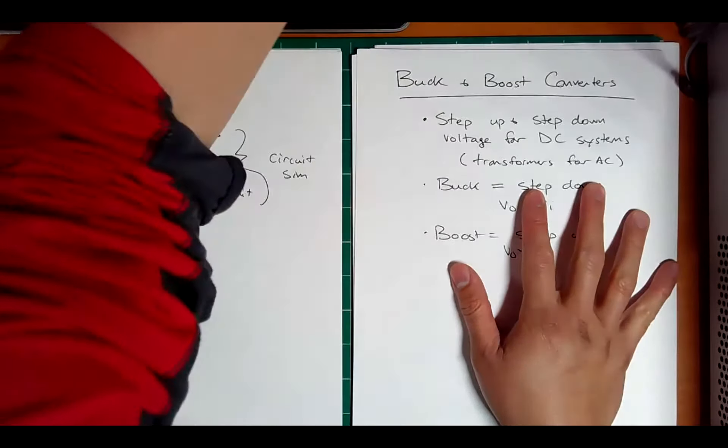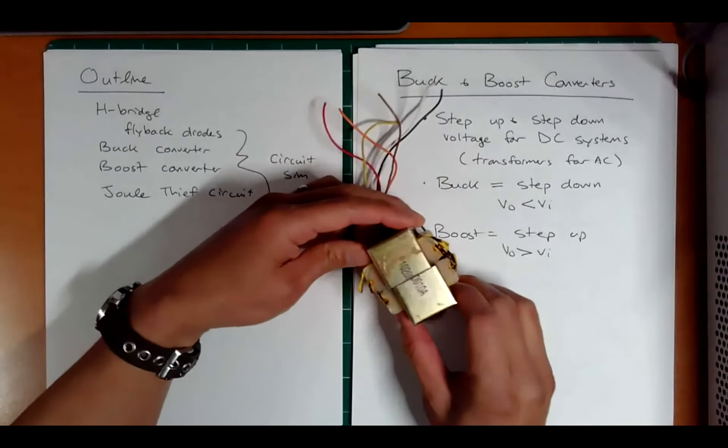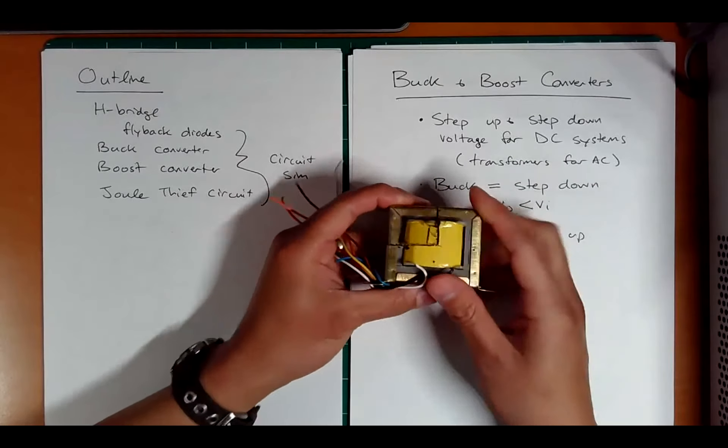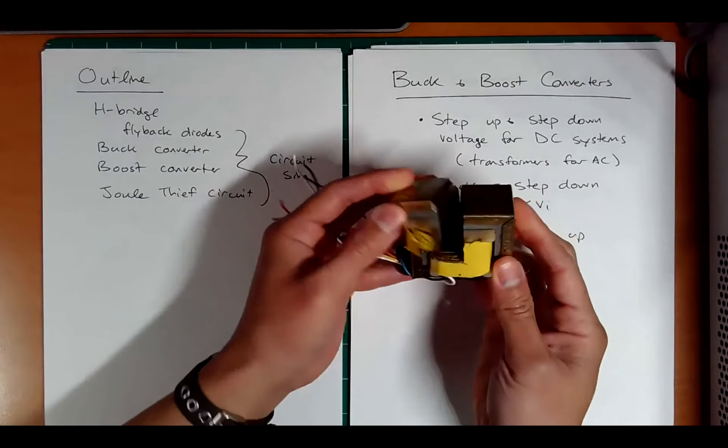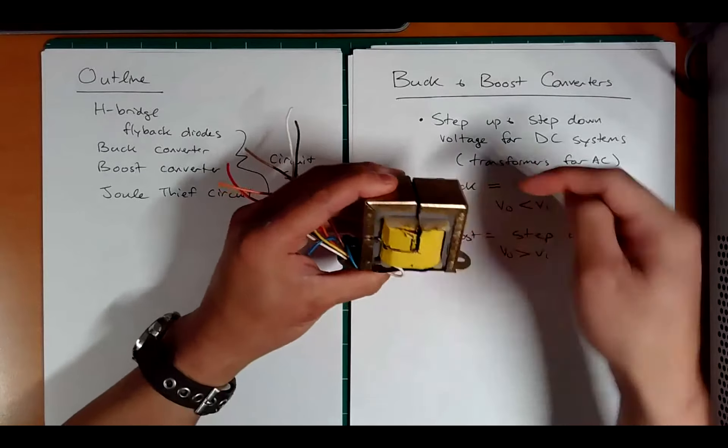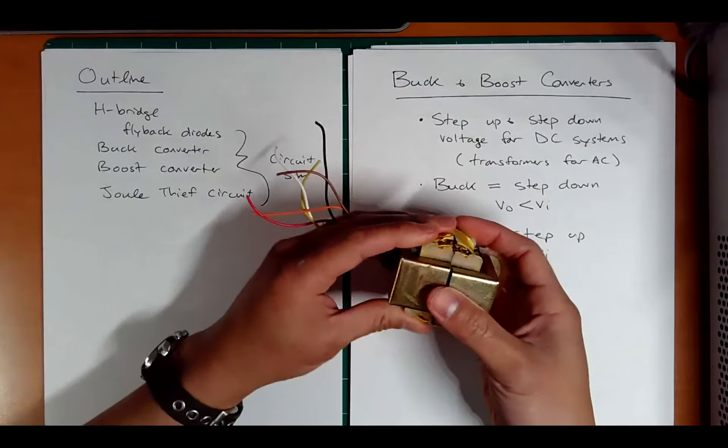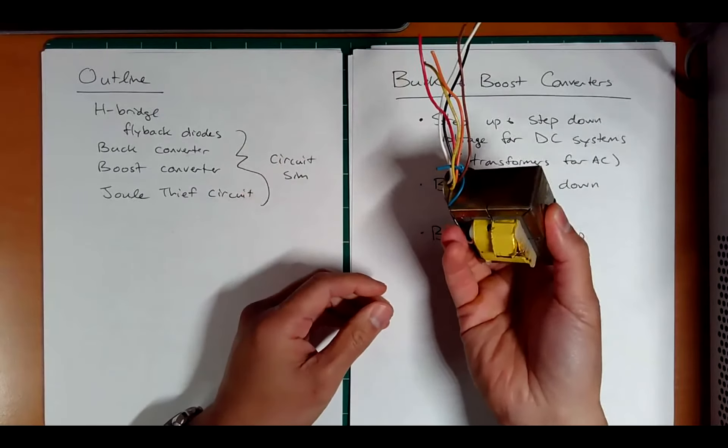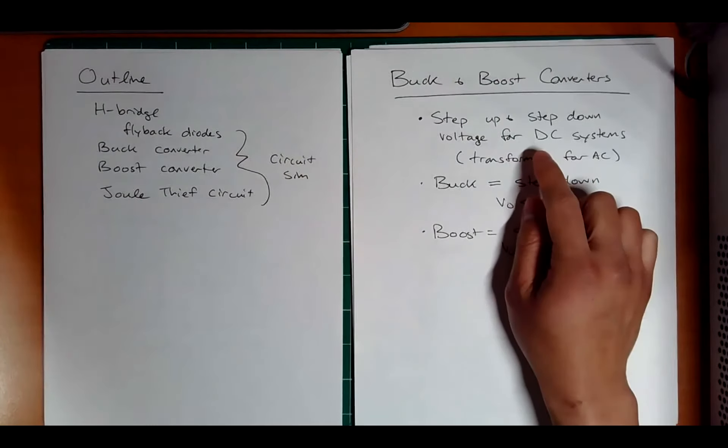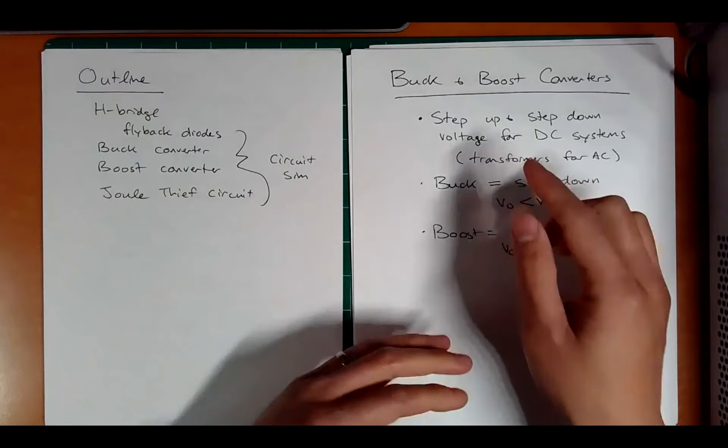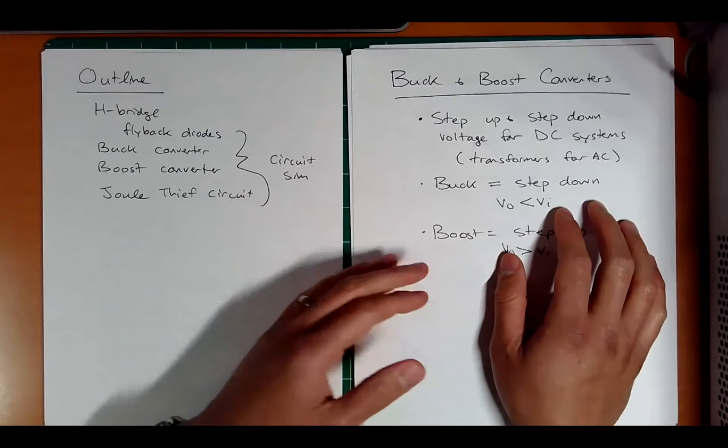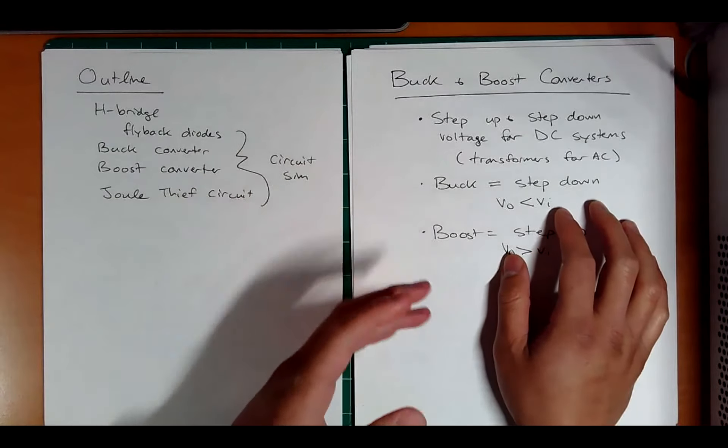Let's look at a buck and boost converter. It's mainly for DC. Now, if you recall, for AC systems, we can use these transformers, right? Pretty nice, super simple technology here. You just have steel and copper coils wrapped around, and this steps up and steps down AC voltage. What if we have DC voltage? What if we want to step that up and down?